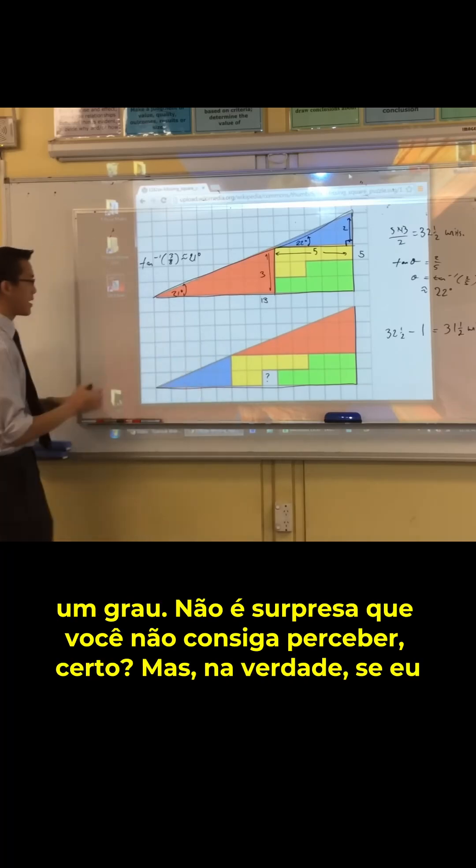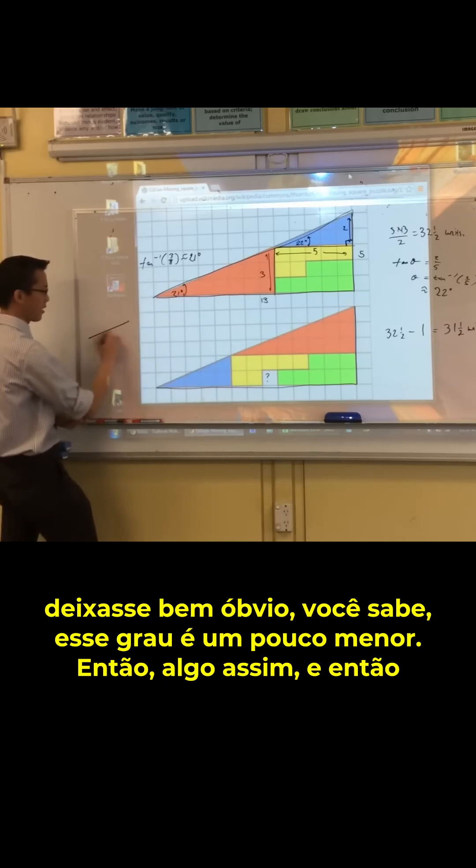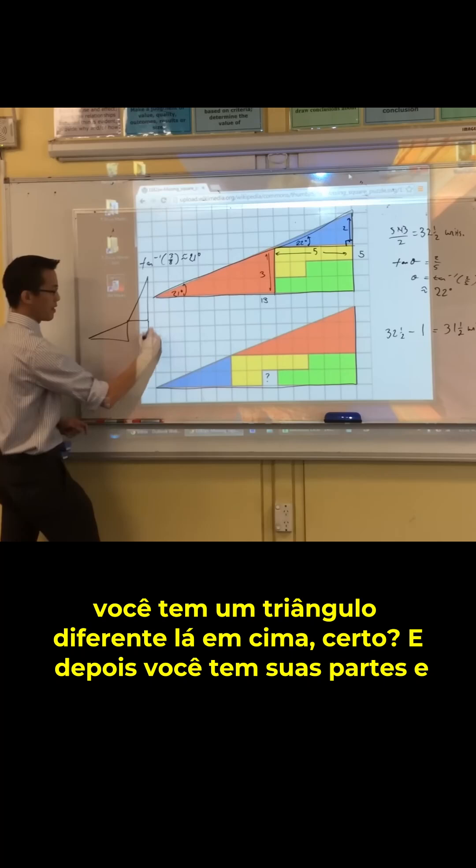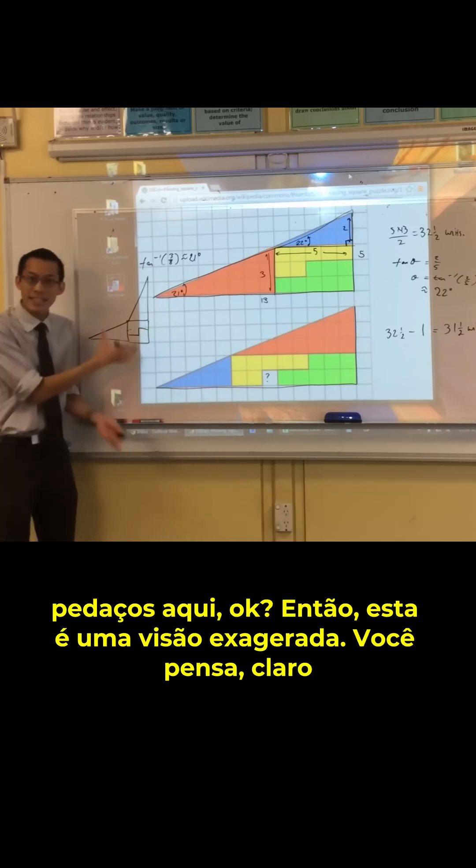But in fact, if I made it really obvious, you know, this degree is a bit smaller. So it's something like this, and then you've got a different triangle up there, right? And then you've got your bits and pieces in here. So this is an exaggerated view.